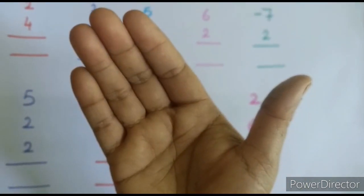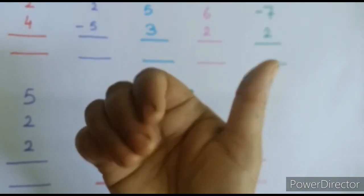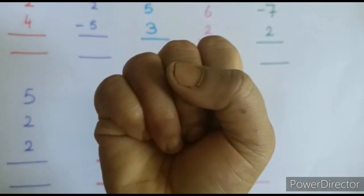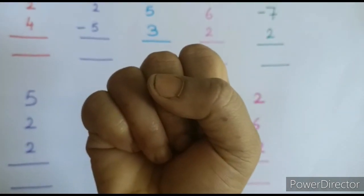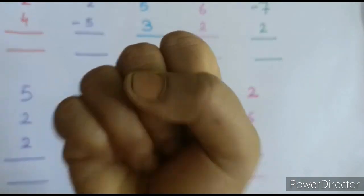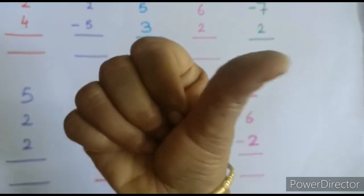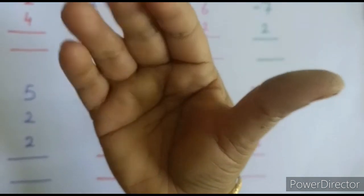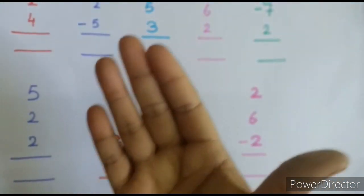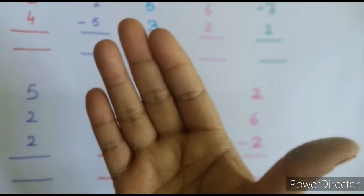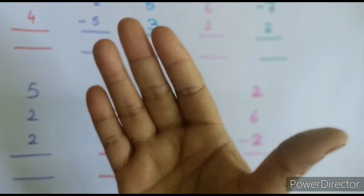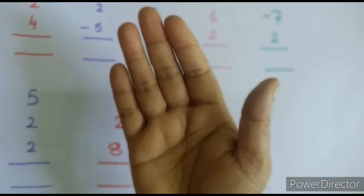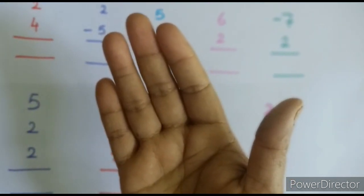If we close all the fingers including the thumb, this will represent 0. So this represents 0. Our thumb represents the number 5, and raised fingers each represent the number 1. In this way, we can show the digits from 0 to 9 in our right hand.